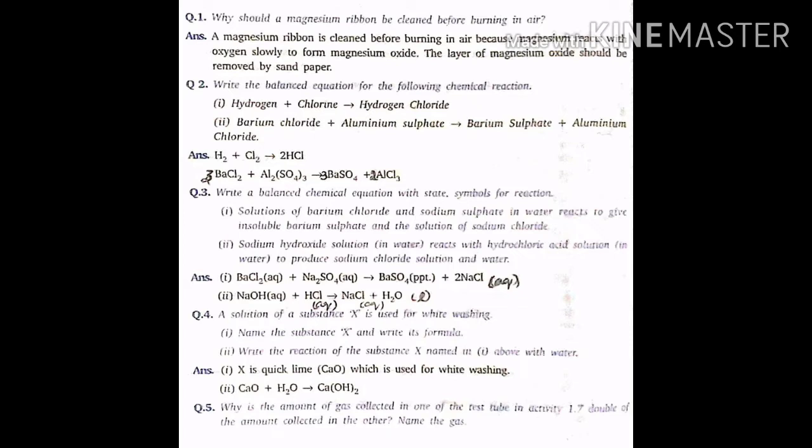Question number 2. Write the balance equation for the following chemical reaction. First, hydrogen plus chlorine gives hydrogen chloride. Hydrogen symbol H2, chlorine Cl2 gives hydrogen chloride HCl. As in the left hand side, 2 hydrogen and 2 chlorine atoms, just write the coefficient 2 before HCl. Now, the equation will be H2 plus Cl2 gives 2 HCl.